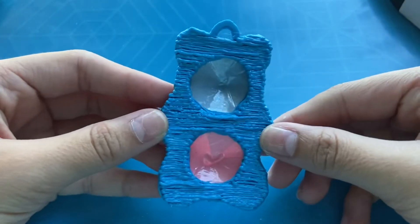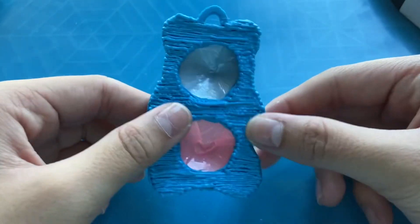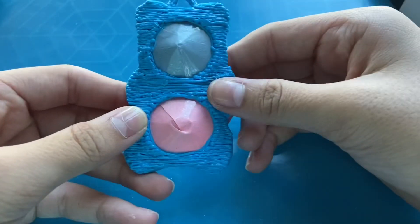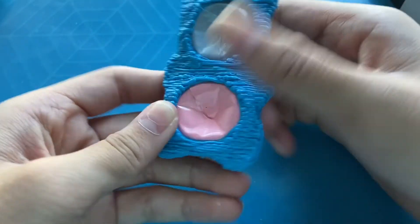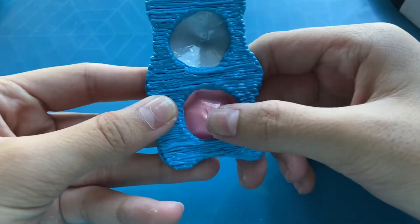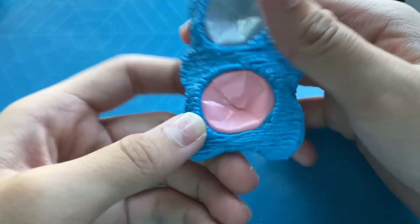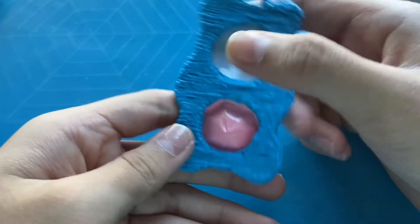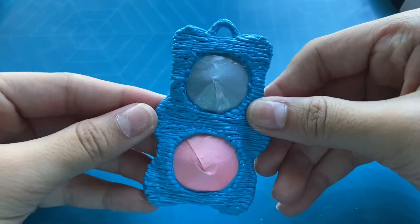So here we go guys. It is kind of splotchy because I was using some bad quality filament. But that's not the point. Here it is. This is what it looks like. And let's give it a pop. Oh that's awesome. So that is how to make a pop it guys.